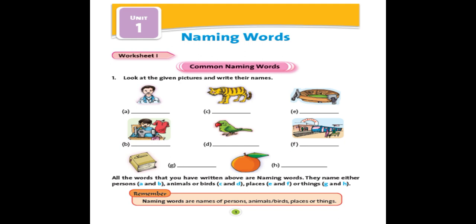See, this is Worksheet 1 of your English practice book. Naming words, common naming words. Look at the given picture and write their names. First one is what? Doctor. What is A? Doctor.